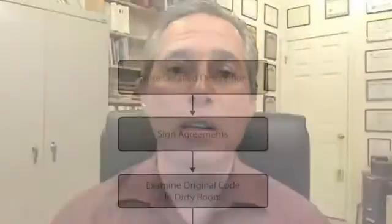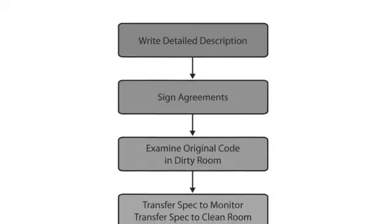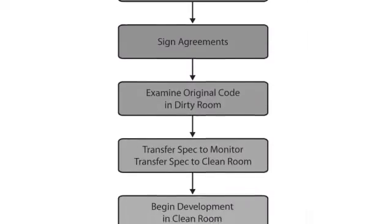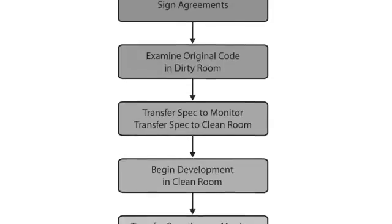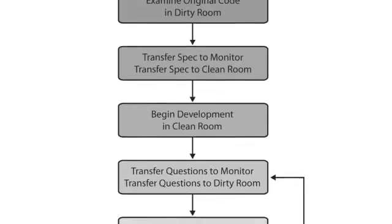With a software clean room, the idea is not to keep particles out but to keep intellectual property out. Typically it's used when two parties reach an agreement — for example, if one company is found to have taken software from another company without permission. They may go to court or reach an agreement where the party that took the code agrees to set up a clean room process to redevelop its software without any code from the party that owns it.